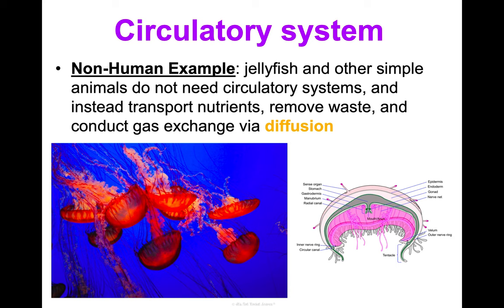Key structures of the respiratory system include your lungs, nasal cavity, mouth, trachea, and diaphragm. For non-human animals, aquatic animals like fish use gills to take in dissolved oxygen from the water and release carbon dioxide. Gills are much more than just slits in the side of a fish's mouth — if you want to learn more, it's worth researching because it's pretty fascinating.